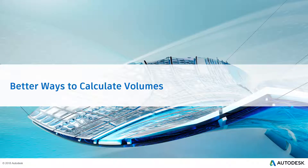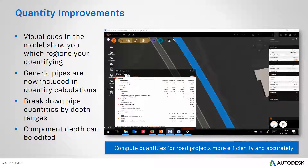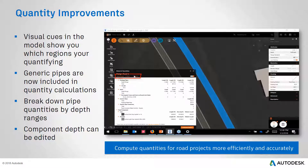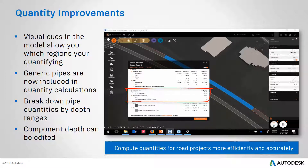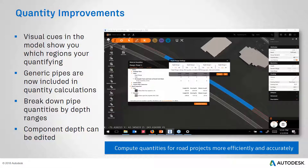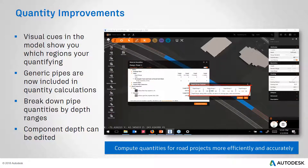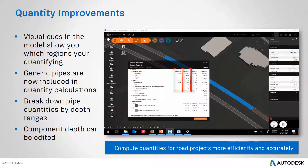Now let's look at improvements to help you calculate volumes more effectively with InfraWorks. Visual cues now show you which regions you are quantifying when you limit an area of interest by station. Also, generic pipes are now included in quantity calculations in addition to drainage pipes, which have been included in prior versions. You can also break down pipe quantities by depth range, giving you more granularity when performing pipe installation cost estimates.